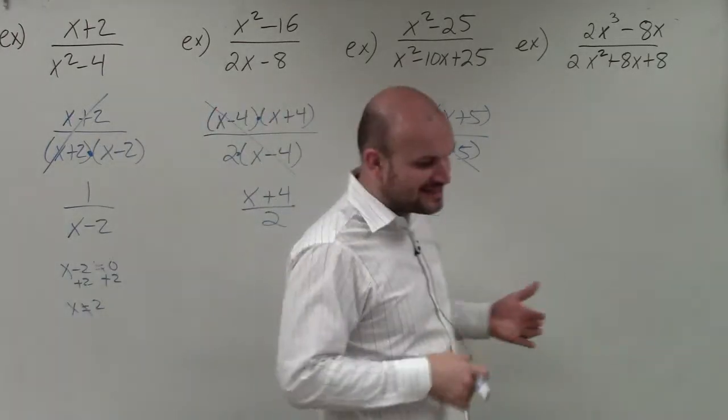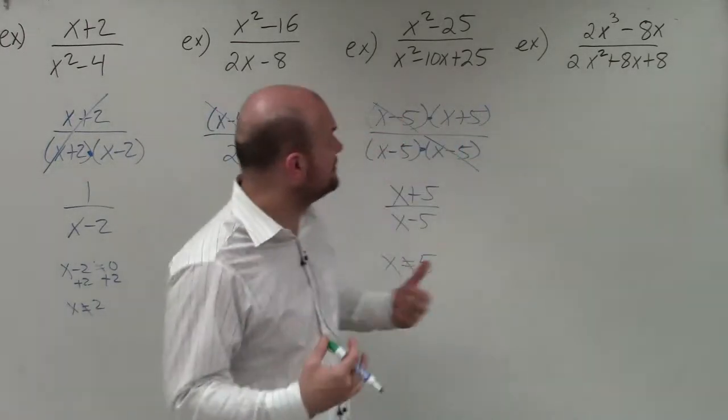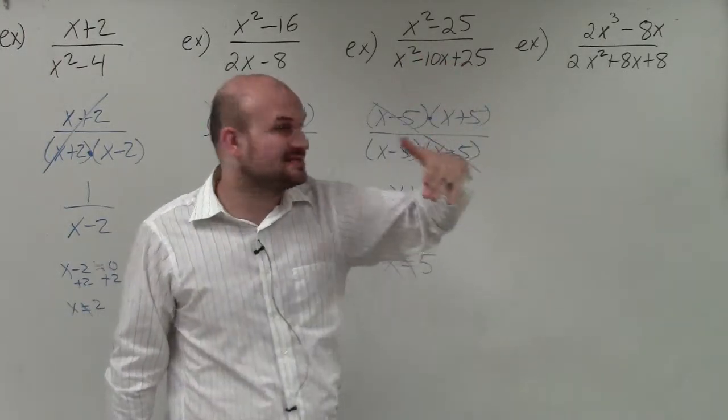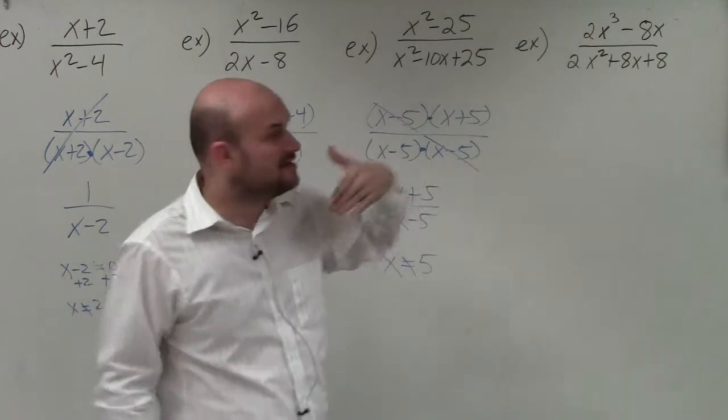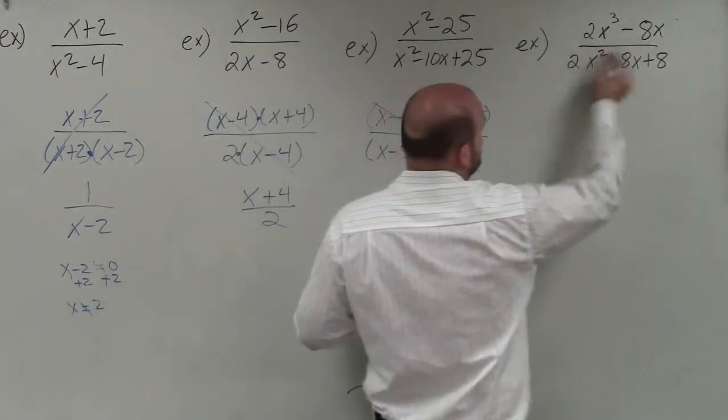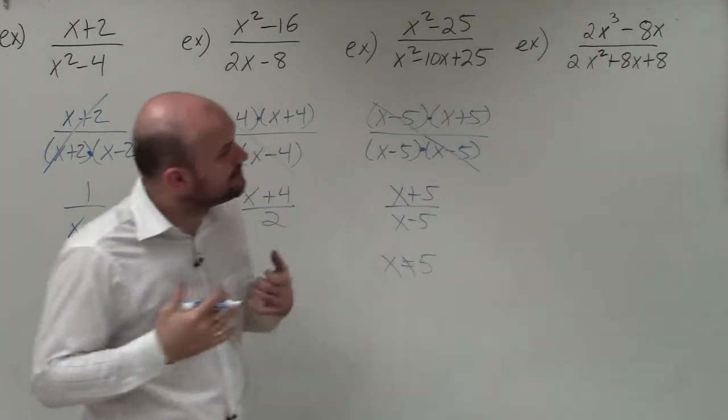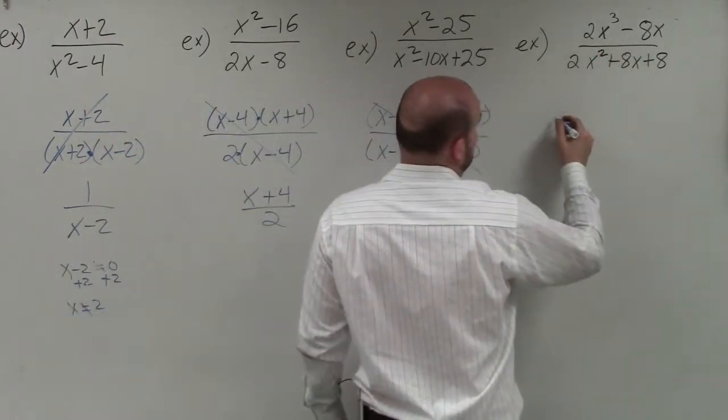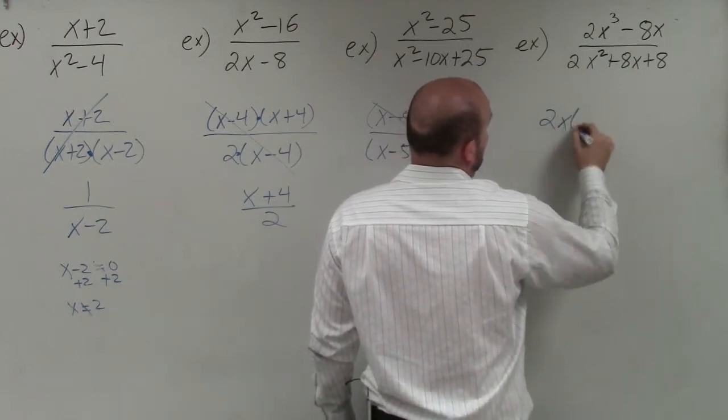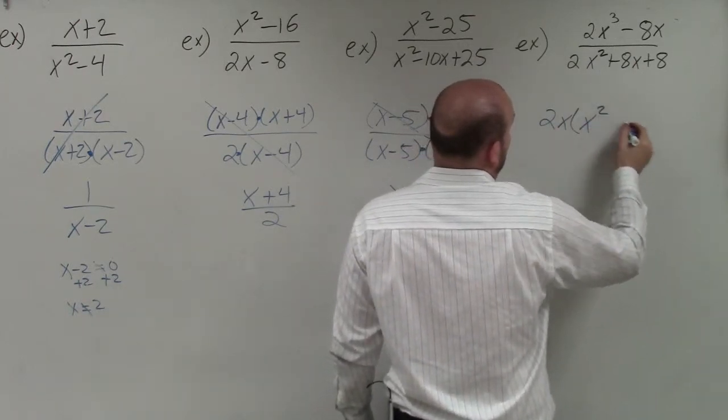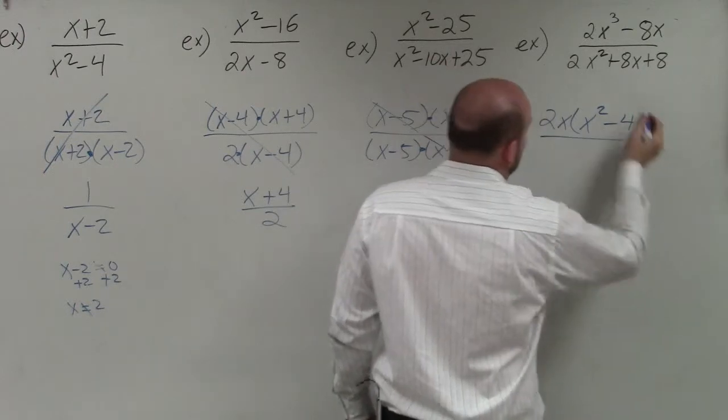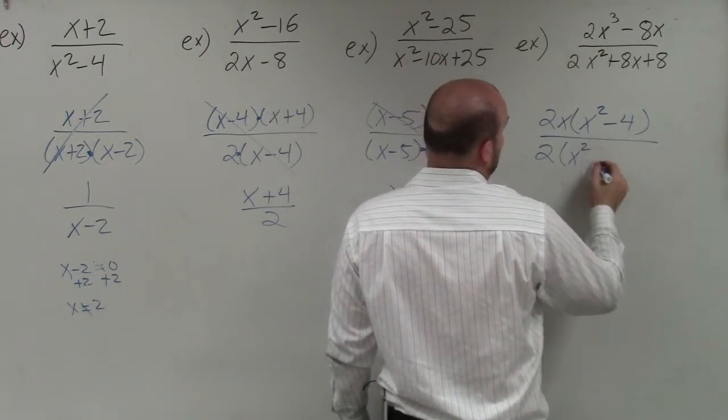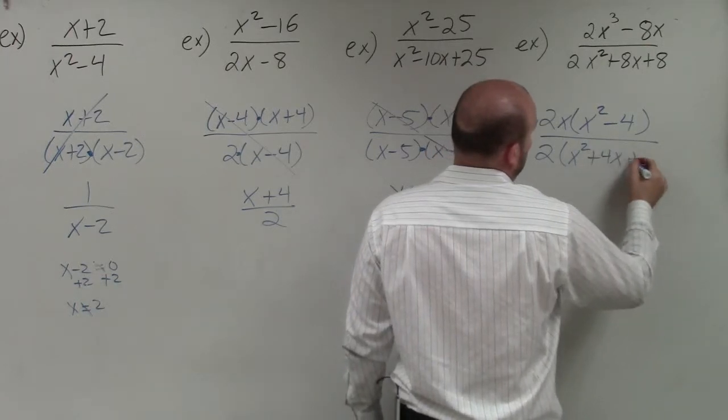All right. In this last example, this one really gets students confused. And actually, it's the exact same type of problem as this one. The only difference is I need to factor out a GCF first. So what I notice here is I have some terms that have some common or I have expressions that have common factors of them. So in the numerator, I can factor out a 2x. So when I factor out a 2x, I'm left with x squared minus 4. In the denominator, when I factor out a 2, I'm left with an x squared plus 4x plus 4.